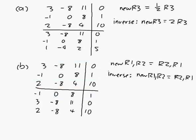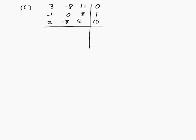So now let's do the next. So in part C, again my matrix A is the same. 3, minus 8, 11, 0, minus 1, 0, 8, 1, 2, minus 8, 4, 10. And I want to turn that into 1, minus 8, 27, 2, minus 1, 0, 8, 1, 2, minus 8, 4, 10.